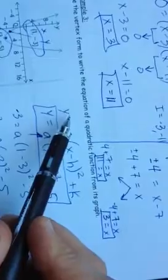h is 3 and k is negative 5, so I plug this in here. I know that the vertex form of a parabola looks like this, and I know that h is 3 and k is negative 5, so that's what I plugged in here.